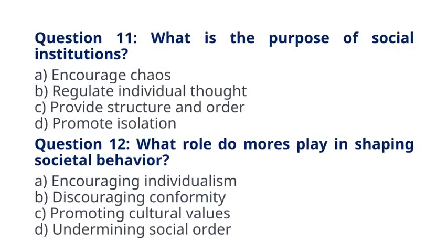Question 11. What is the purpose of social institutions? A. Encourage chaos. B. Regulate individual thought. C. Provide structure and order. D. Promote isolation. The correct answer to question 11 is option C, Provide structure and order. Explanation: Social institutions provide structure and order by establishing patterns of behavior and relationships.